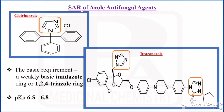Dear students, now we are going to see the SAR of Azole Antifungal Agents. We have already seen drugs under Azole Antifungal Agents — two types: imidazole and triazole. We have seen imidazole-containing antifungal agents and triazole-containing antifungal agents. One example for imidazole-containing antifungal agent is clotrimazole, and one example for triazole-containing antifungal agent is itraconazole.